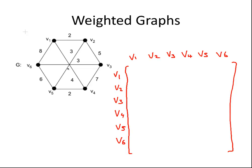So let's look at vertex 1. It's not connected to itself, so 0 there. It is connected to vertex 2, and therefore we're going to put a 2 there because the weighting of that edge is 2. So the entry for the adjacency matrix is 2.